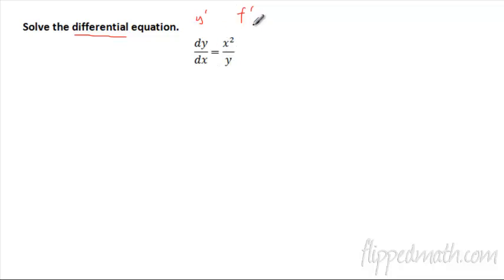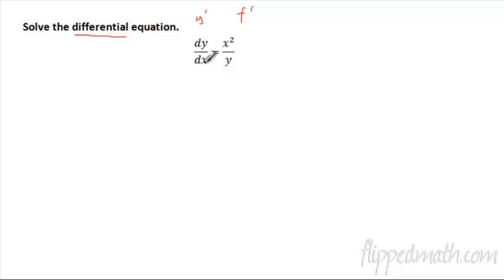We're going to try to find what is the original function. It's kind of like implicit differentiation backwards — we have x and y over here. Can we find the antiderivative? We're going to learn a pretty cool technique here called separating the variables. We're going to split up this dy/dx and get all our y's on one side and all our x's on the other.